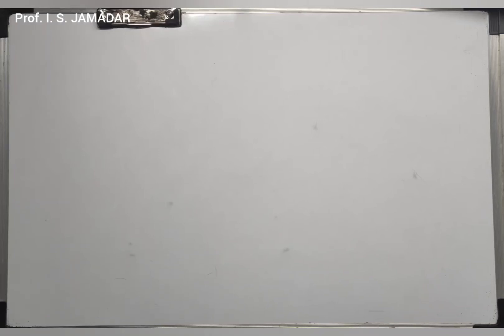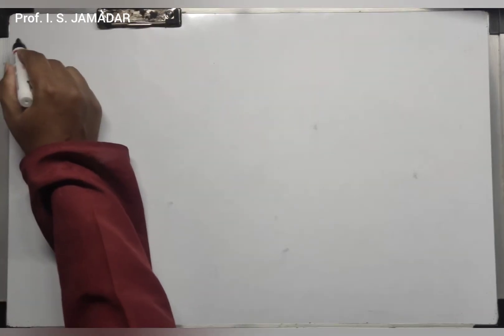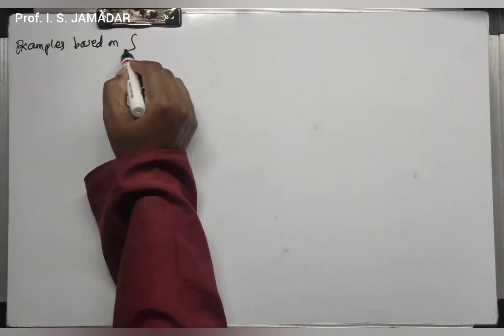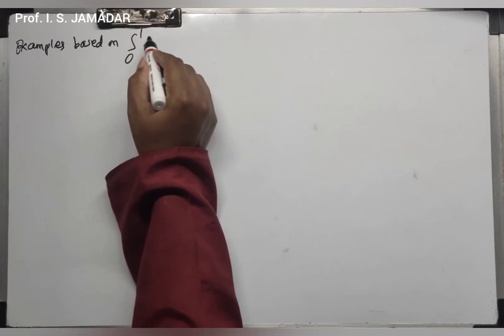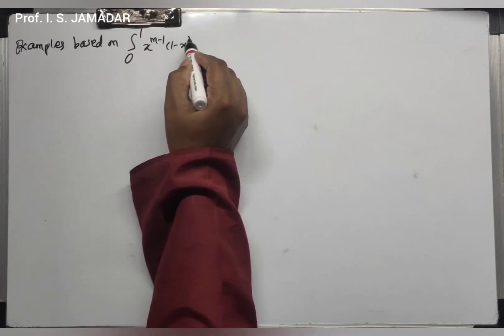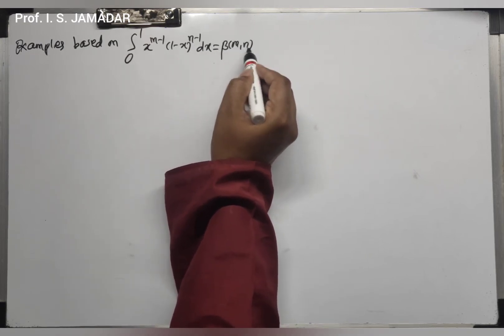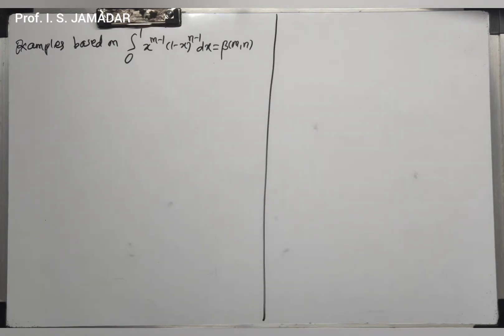Welcome to the third session of the beta function. In the last session, we saw examples of the type to evaluate the integral from a to b of (x-a)^m times (b-x)^n dx. Now in this third session, we are going to consider examples based on the basic formula: integration 0 to 1 of x^(m-1) times (1-x)^(n-1) dx equals beta(m,n). This is the basic formula for the beta function, and using this, we will try to solve some examples.